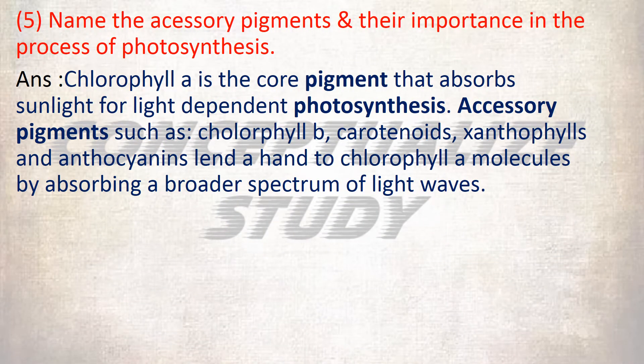Next, name the accessory pigments and their importance in the process of photosynthesis. Chlorophyll A is the core pigment that absorbs sunlight for light-dependent photosynthesis. Accessory pigments such as chlorophyll B, carotenoids, xanthophylls, and anthocyanins lend a hand to chlorophyll A molecules by absorbing a broader spectrum of light waves.